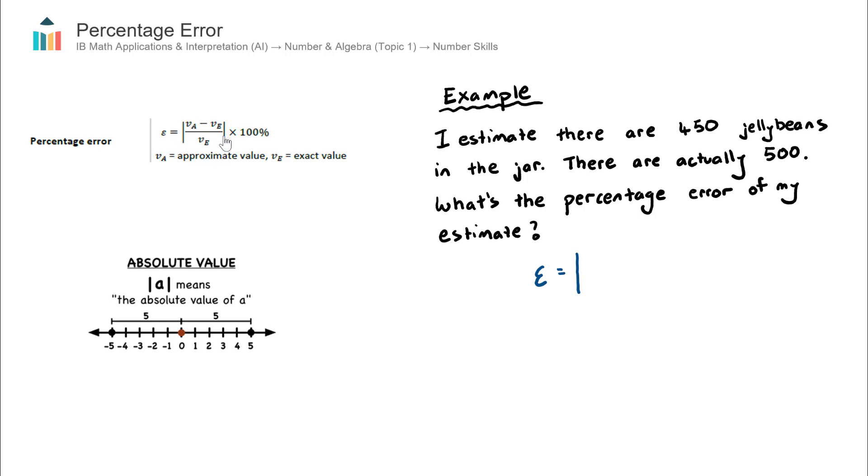These vertical lines mean the absolute value, and the absolute value means whatever is inside the vertical lines, if it turns out to be negative, just simply turn it back into a positive. That's all that means.